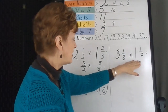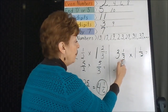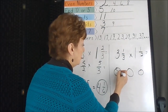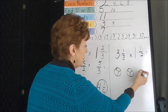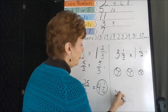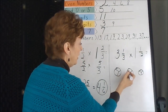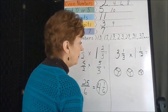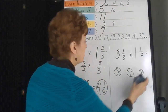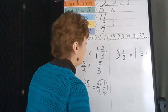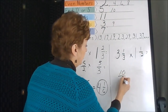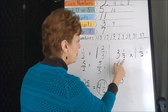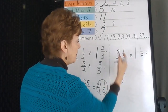Let's look at another example. Our next problem is three and one third times one and one half — two mixed numbers. How many thirds can we get out of three whole things? If we separate these into thirds we would get one, two, three, four, five, six, seven, eight, nine, and we also had one to begin with, so this fraction gives us ten thirds.